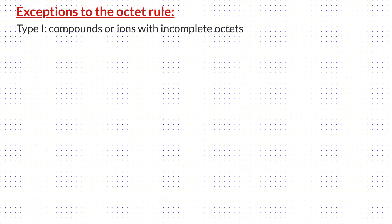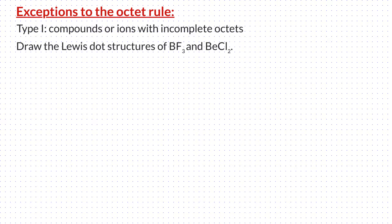First, incomplete octet. Before we discuss what an incomplete octet means, I want you to draw the Lewis dot structures of the following molecules: BF3 and BeCl2. Let us do this together. Boron, the least electronegative element, goes in the center, and the fluorines on the three sides.